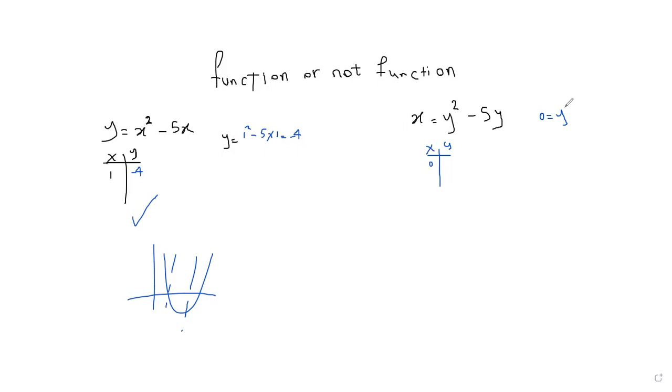0 equals y squared minus 5y. I can write it in factored form: y times (y minus 5). Two things multiplied by each other equal 0.